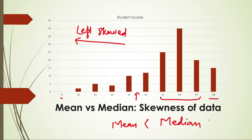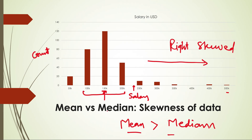So in this case, if somebody asks what the typical score in this subject is, it's very likely you should say between 70 to 90. But the mean is not in that range. Depending on whether the data is left-skewed or right-skewed, mean will be less than median or greater than median respectively.